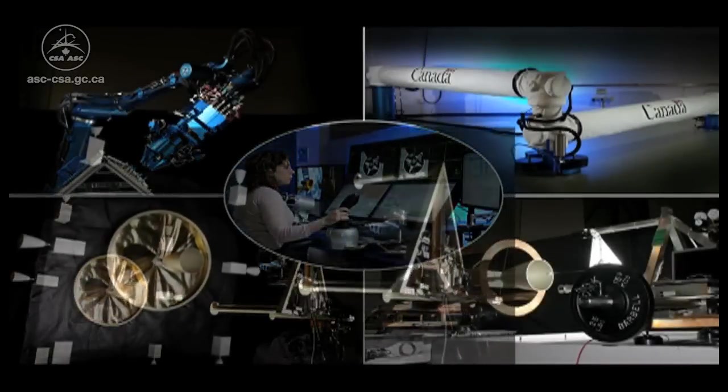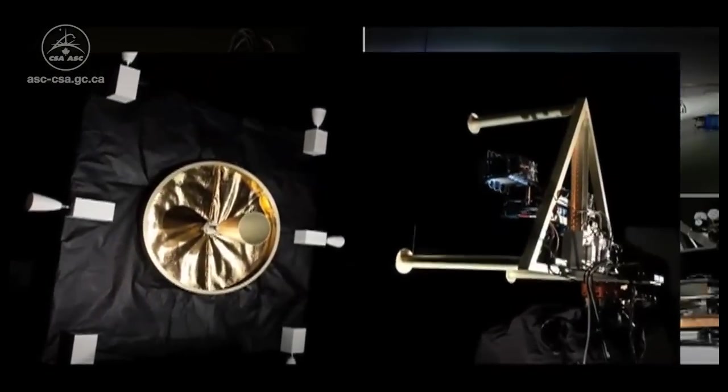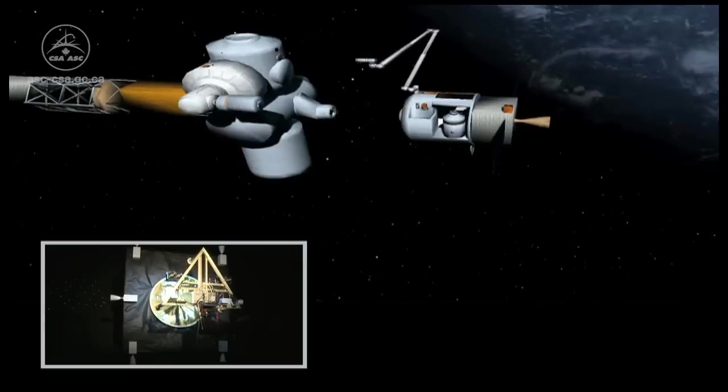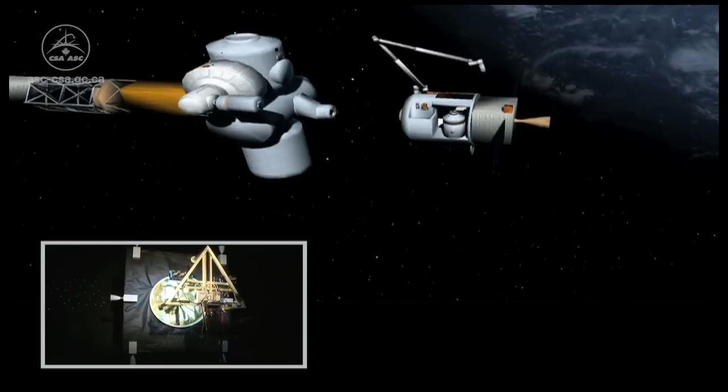Once the precision robotic servicing tasks to refuel and replace parts on the spacecraft are complete, the spacecraft can undock and move to the next satellite that requires servicing.